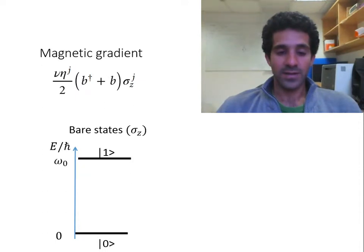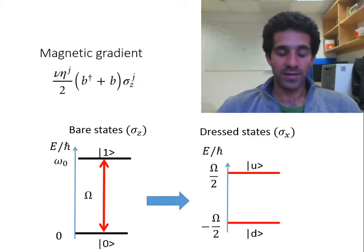To fight it, we can use continuous dynamical decoupling, so we apply an on-resonant Rabi field with this transition, which takes us to the dressed basis, which is protected against the magnetic noise.